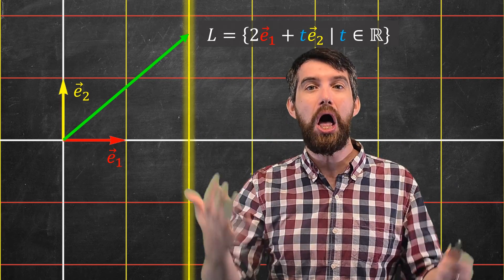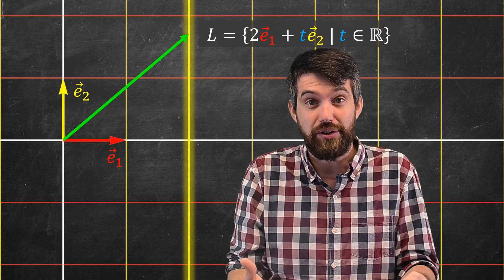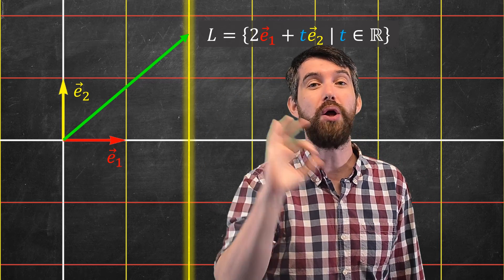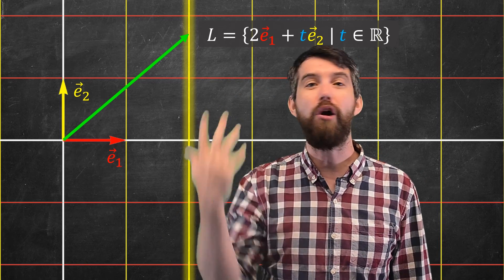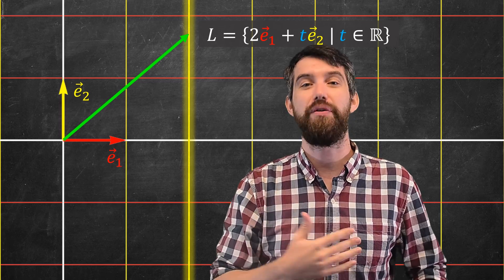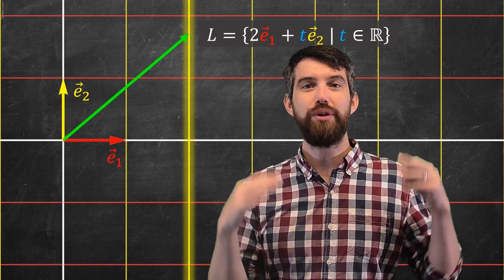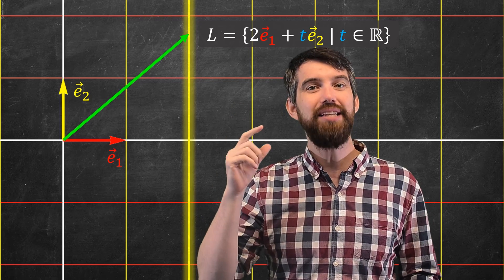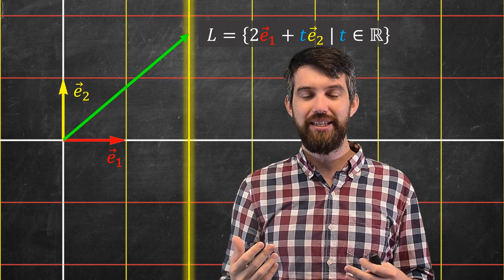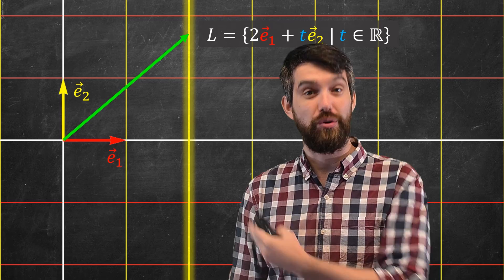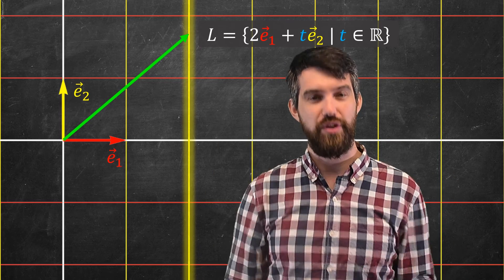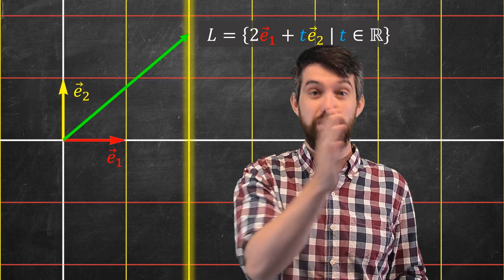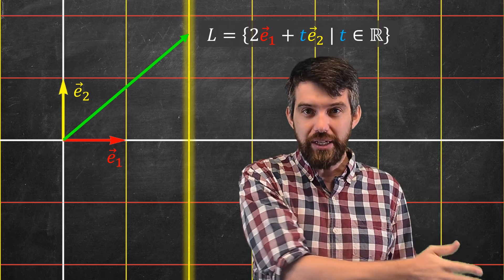This line is equal to a particular set of vectors — specifically, it's the set of vectors which is always 2 along E1, and then some arbitrary amount t along E2. What's crucial about this being a grid line is that the 2 here is an integer. When I look at all of the vertical grid lines, there's the one right at the origin, then the one which is one step to the right, then two steps to the right, and then three steps to the right.